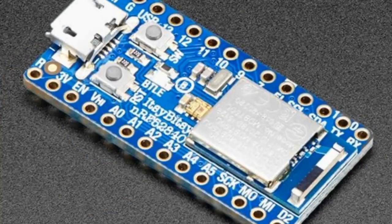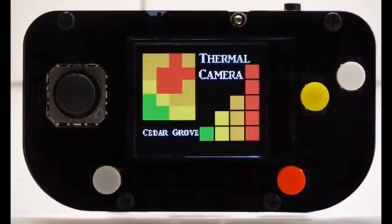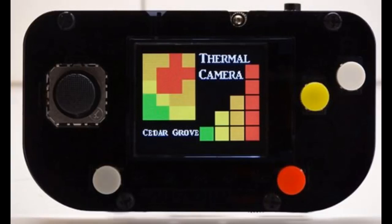Some new products running CircuitPython: we have the Itsy Bitsy — people wanted something small, it has Bluetooth, it's the Itsy Bitsy NRF52840, a Bluefruit board but so teeny. Also, the CircuitPython thermal camera that Cedar Grove is working on — it's a cool project with a GitHub repo and video on YouTube. As Cedar Grove was discovering how DisplayIO worked, they made these cool graphics to better understand themselves how it all worked.